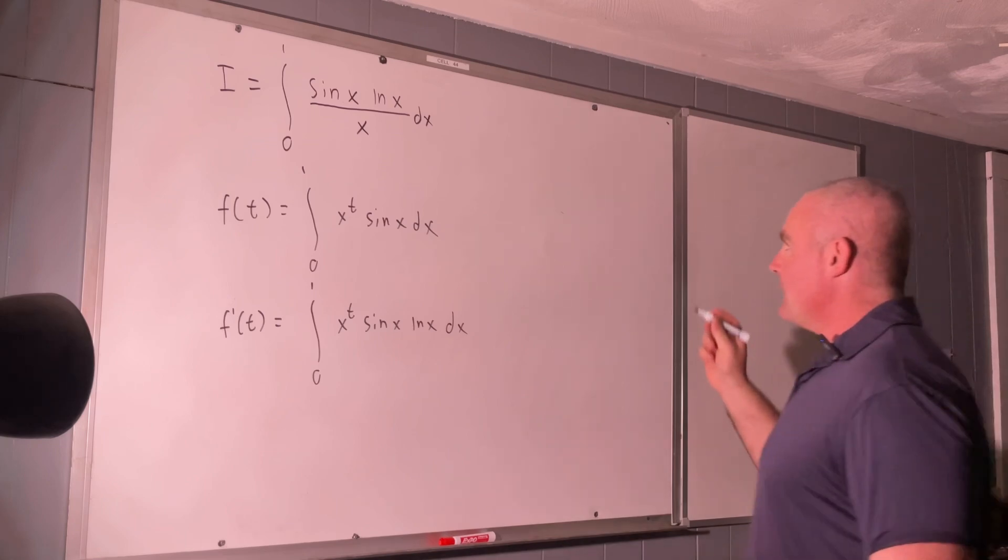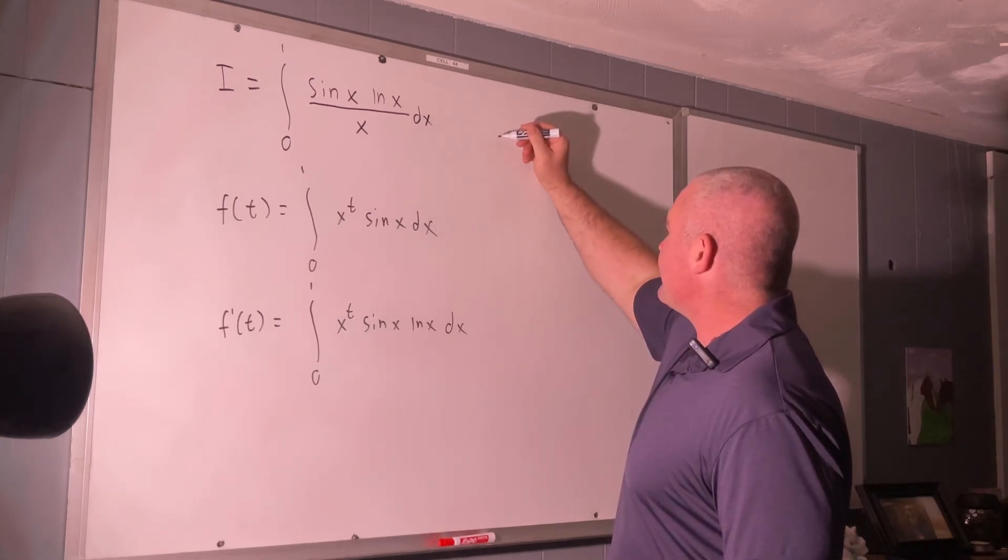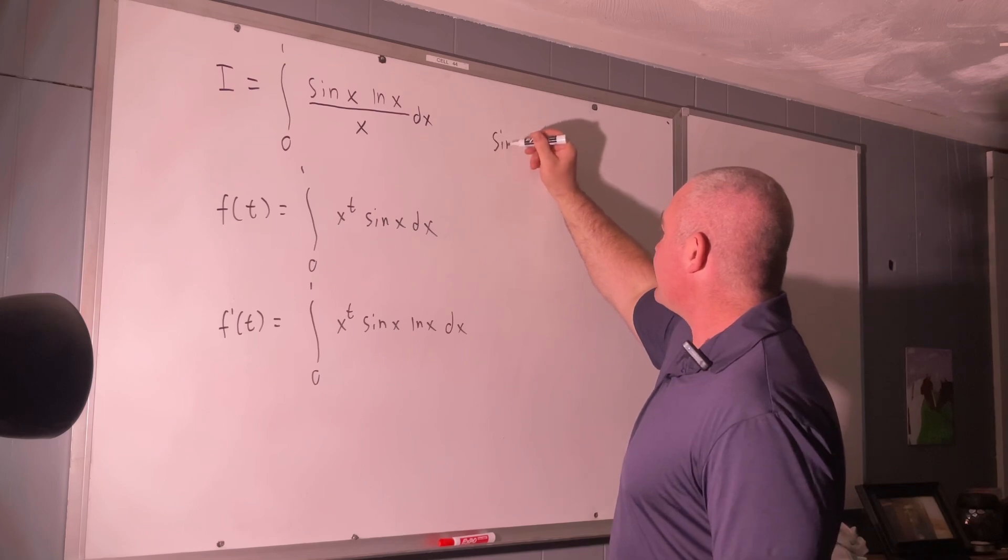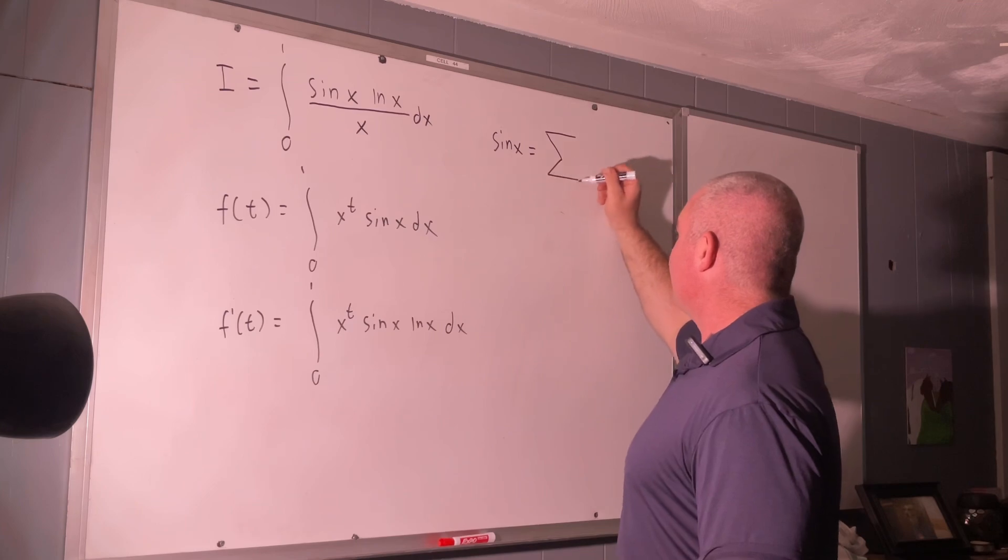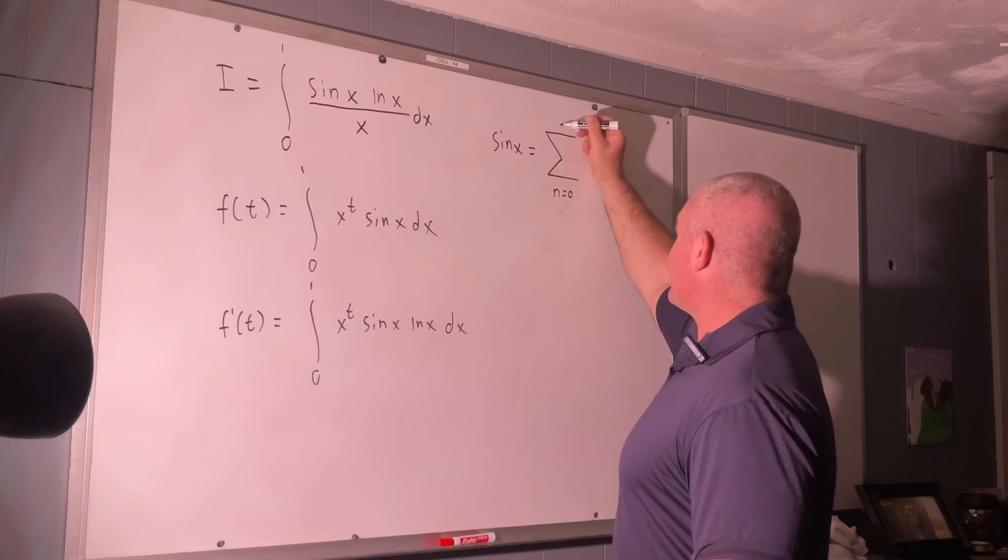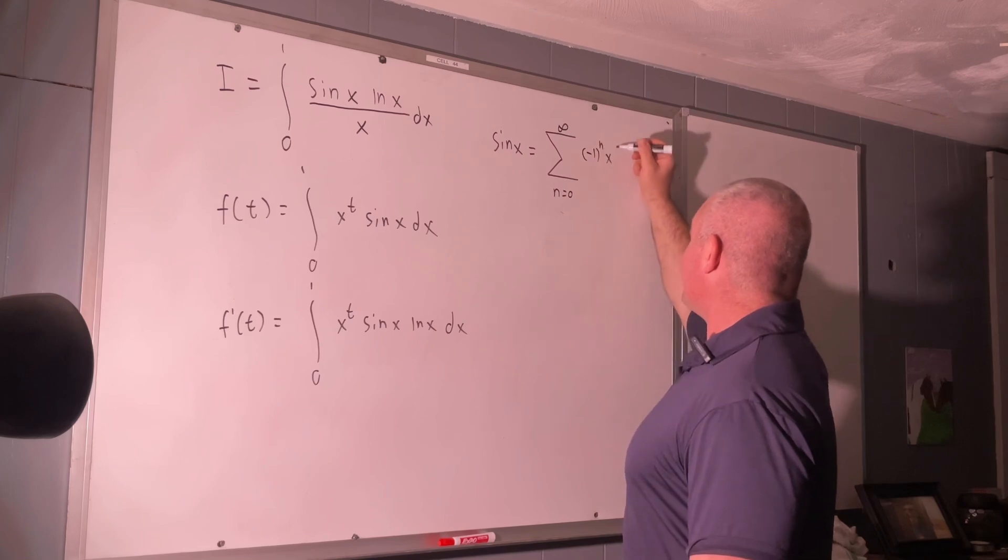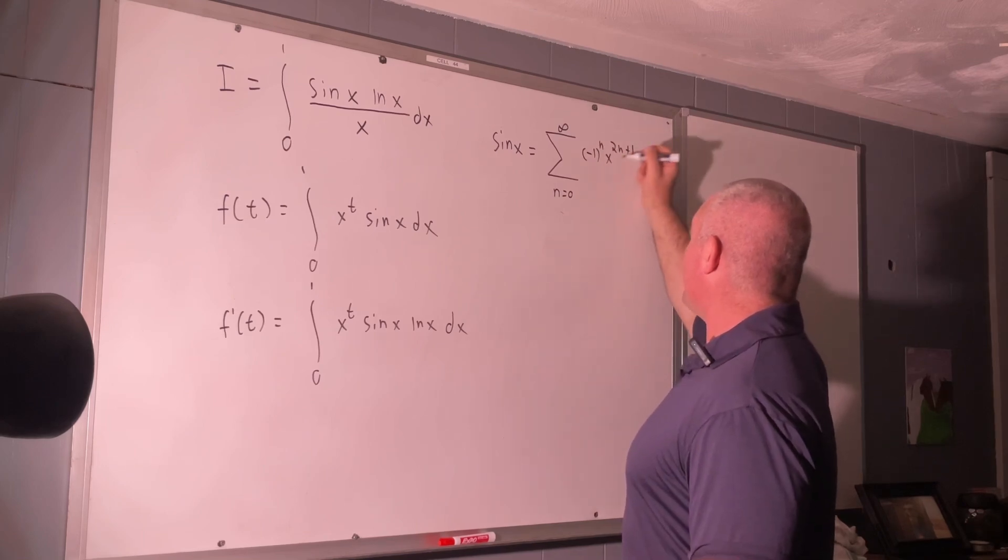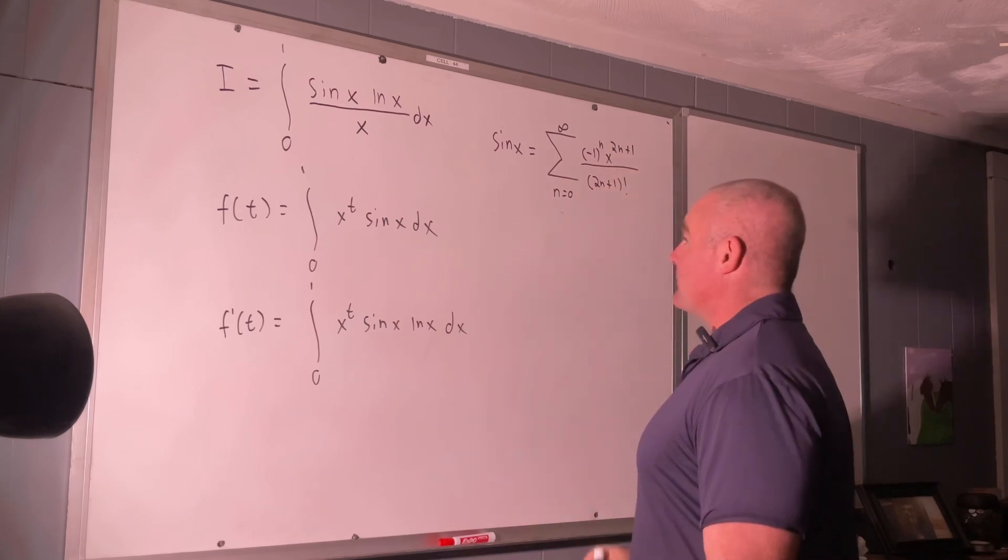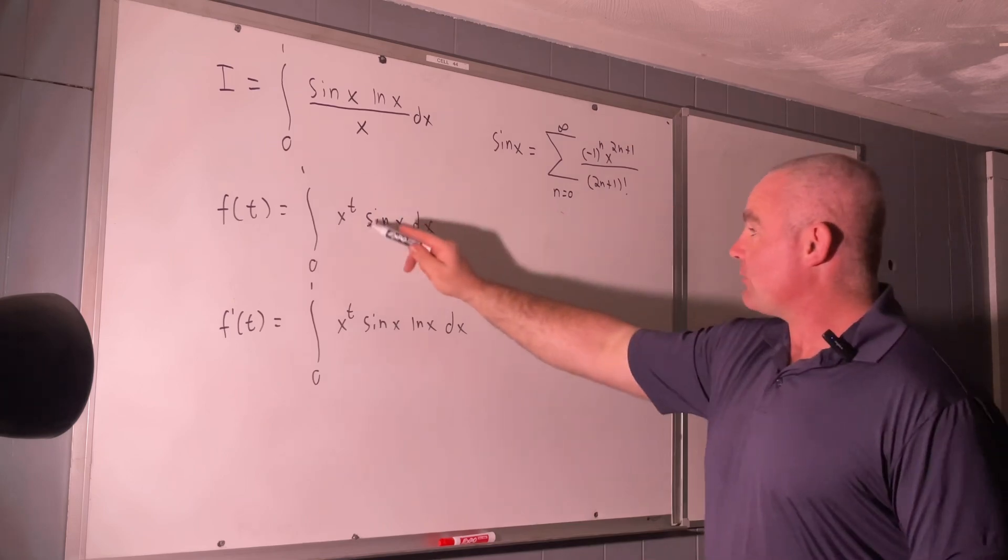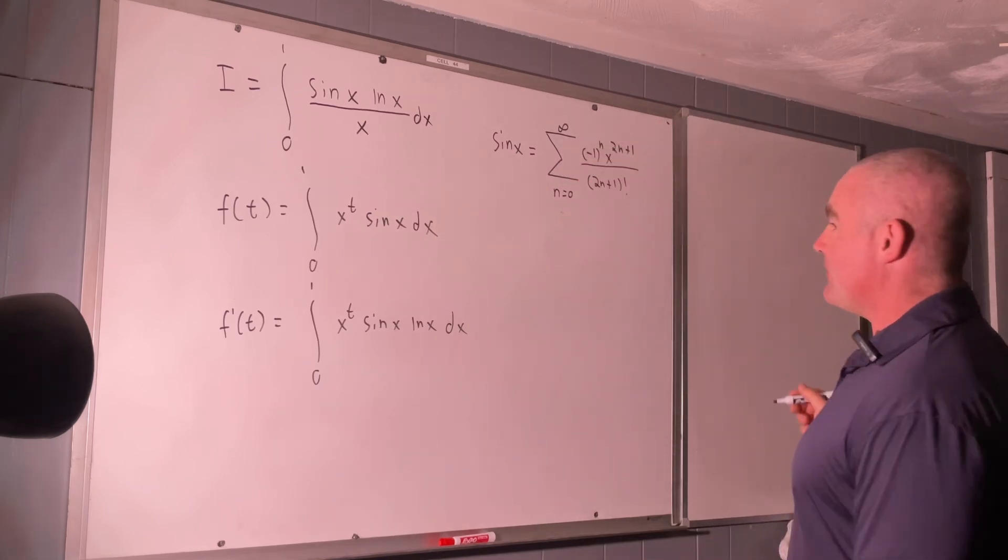Well, let's recall this. I'm sure you guys all know that sin of x is equal to the sum, as n goes from 0 to infinity of negative 1 to the n times x to the 2n plus 1 over 2n plus 1 factorial. So, we can literally replace that sin x with this. So, let's go ahead and do that.